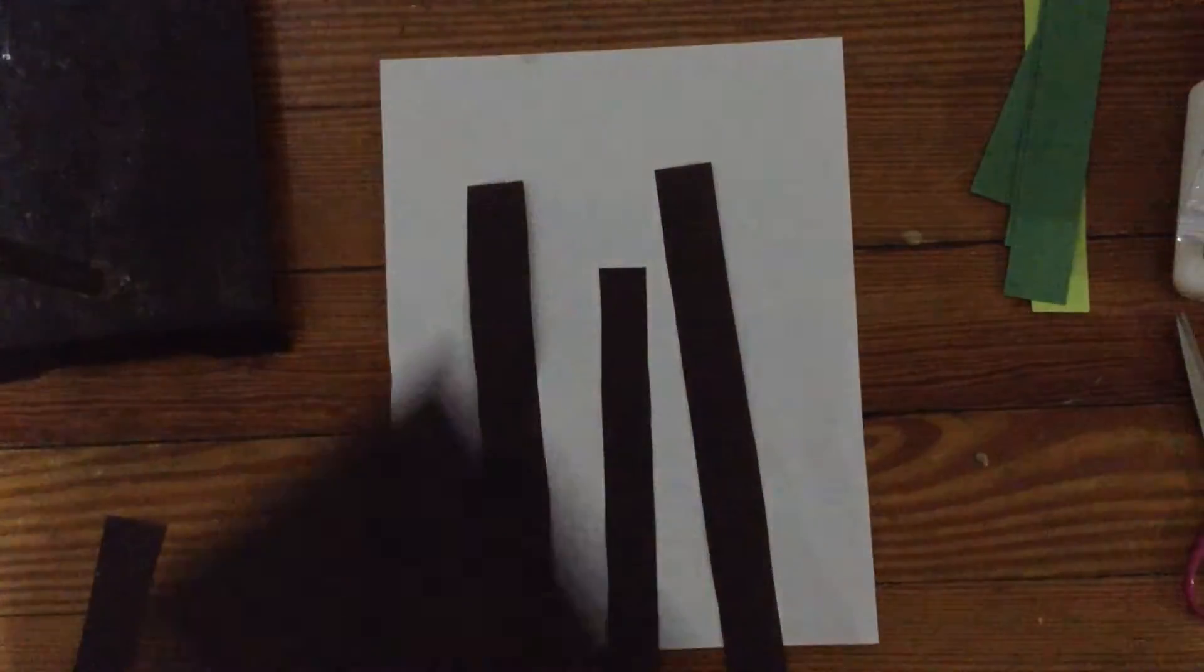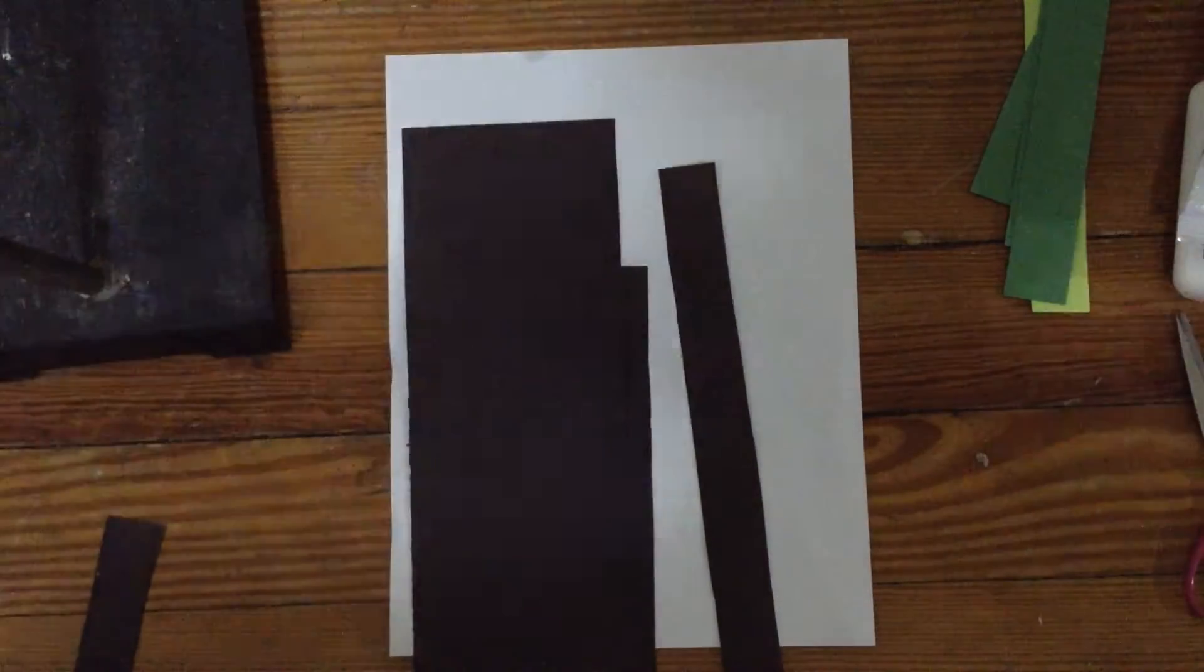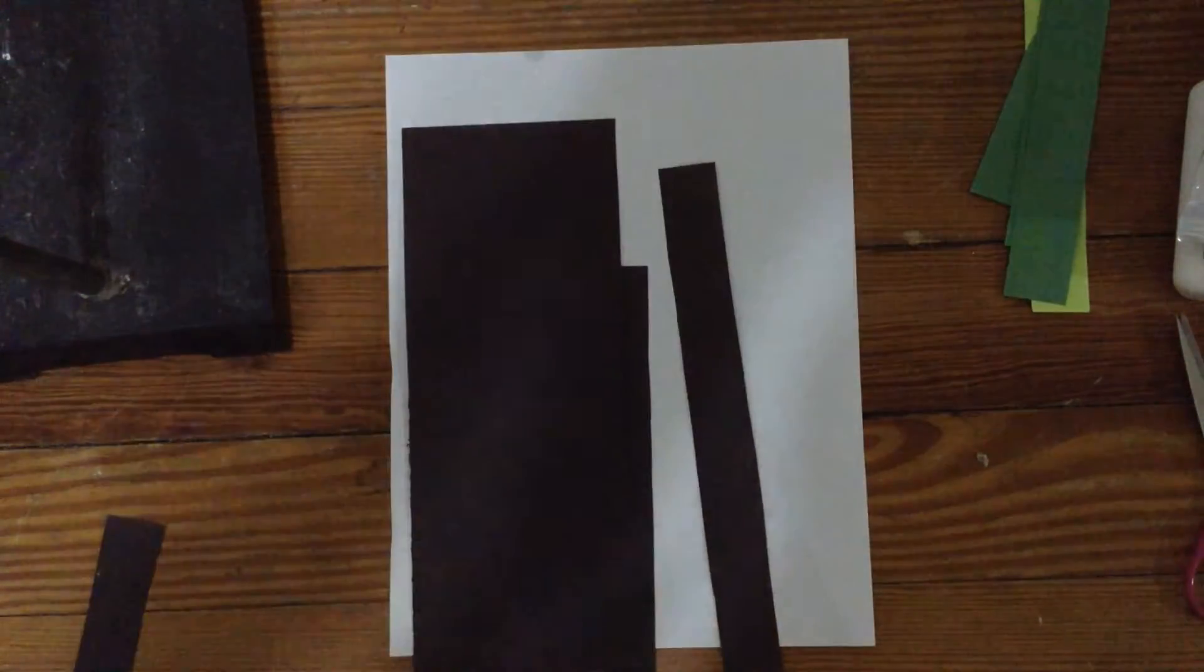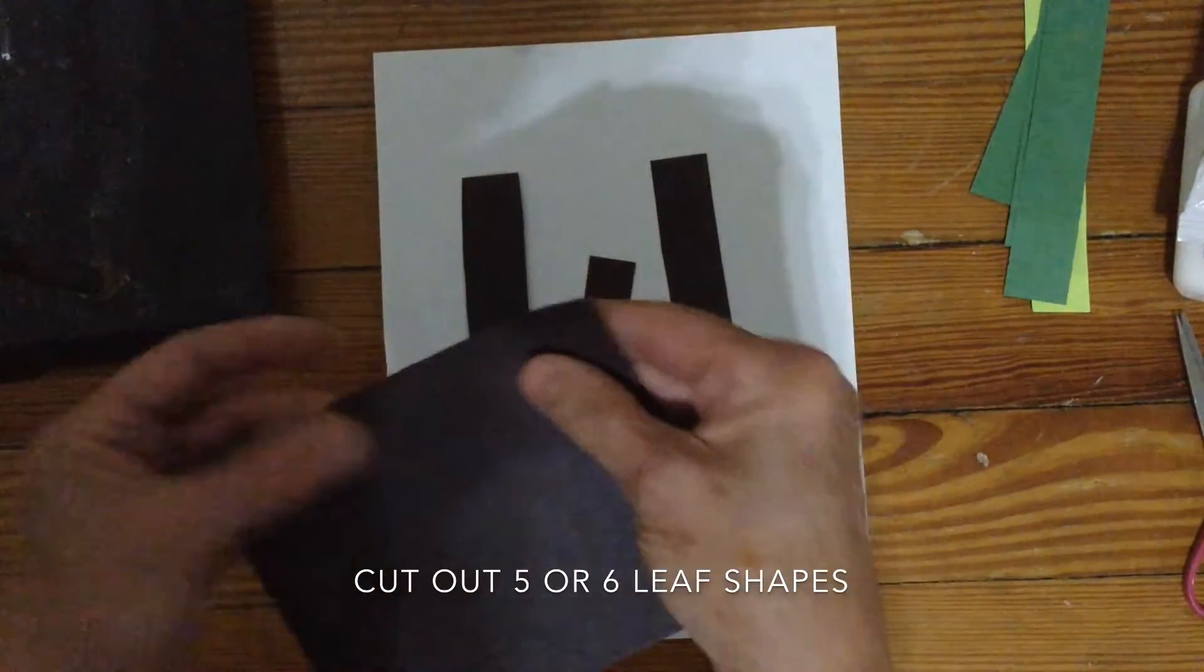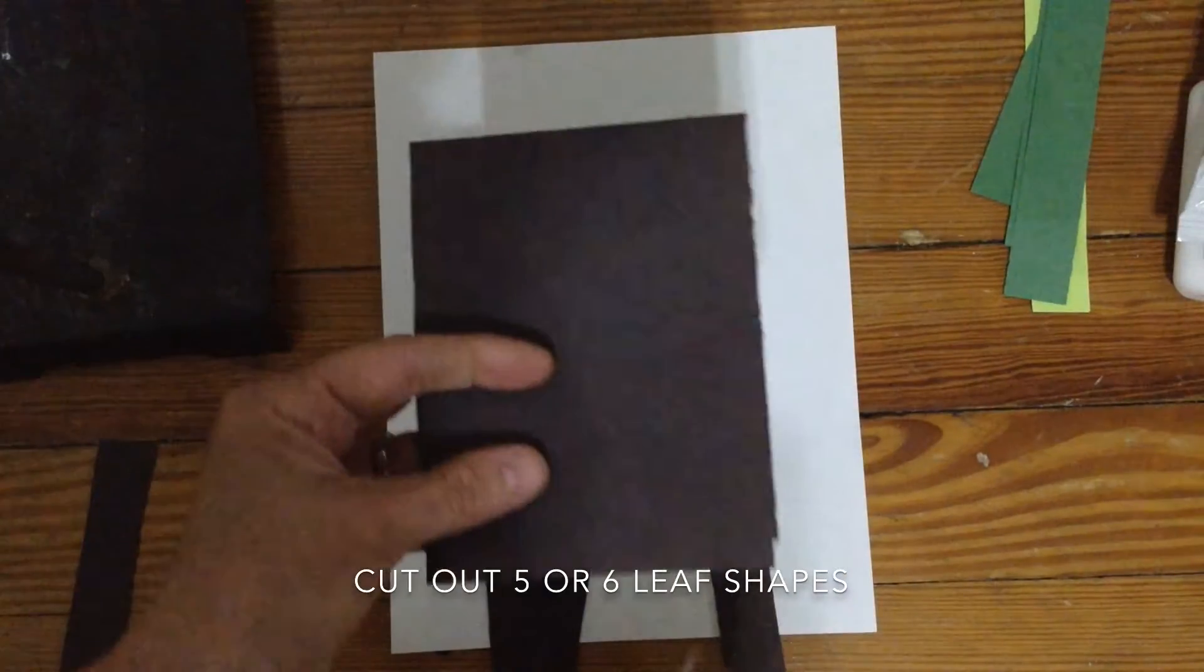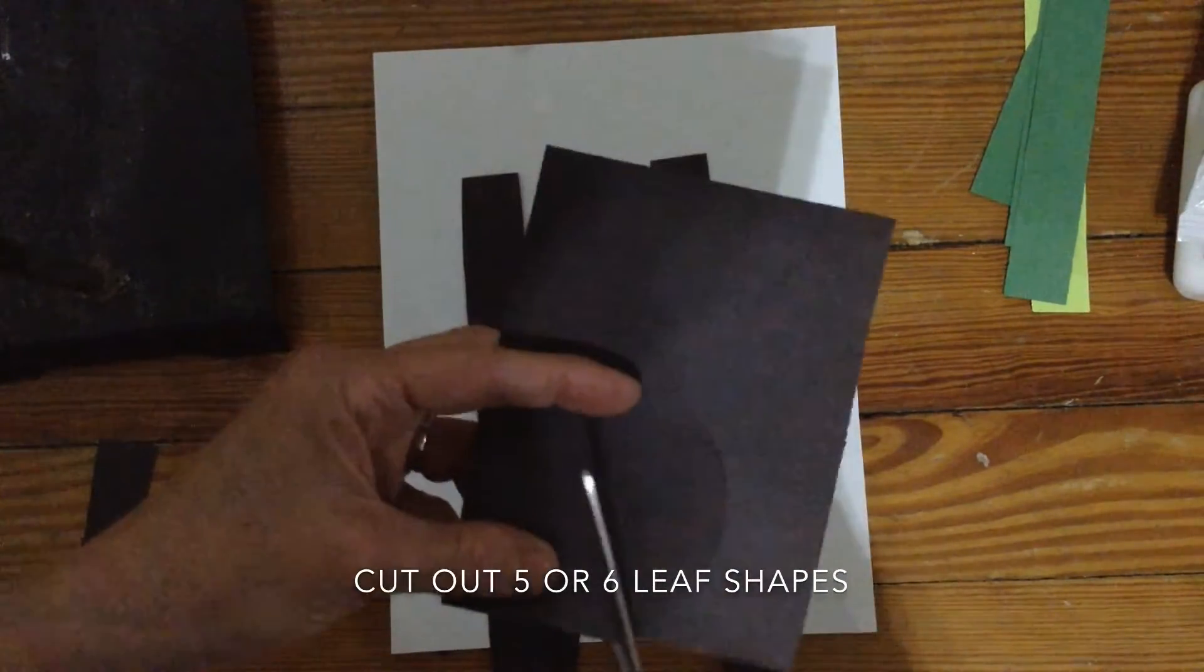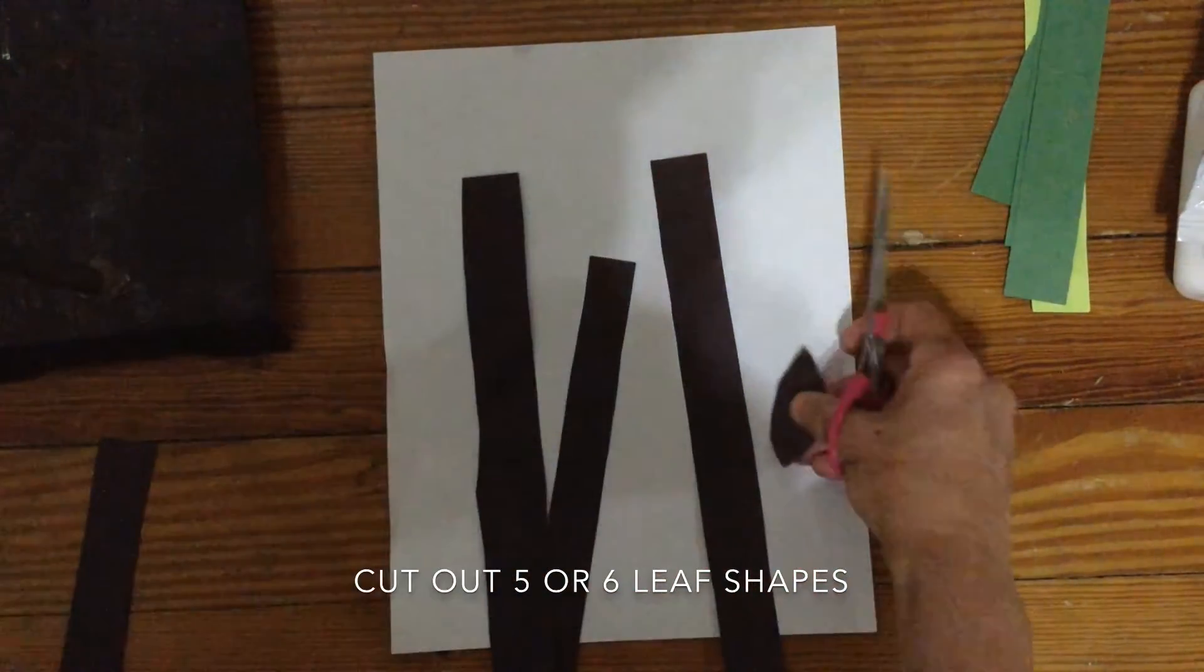And with the other side of the paper you're gonna cut out leaves. You can either cut the shape or draw it first. And I would fold the paper when I cut off the leaf shape. That way you'll get at least two leaves the same shape. And just cut out that football-looking shape for leaves.